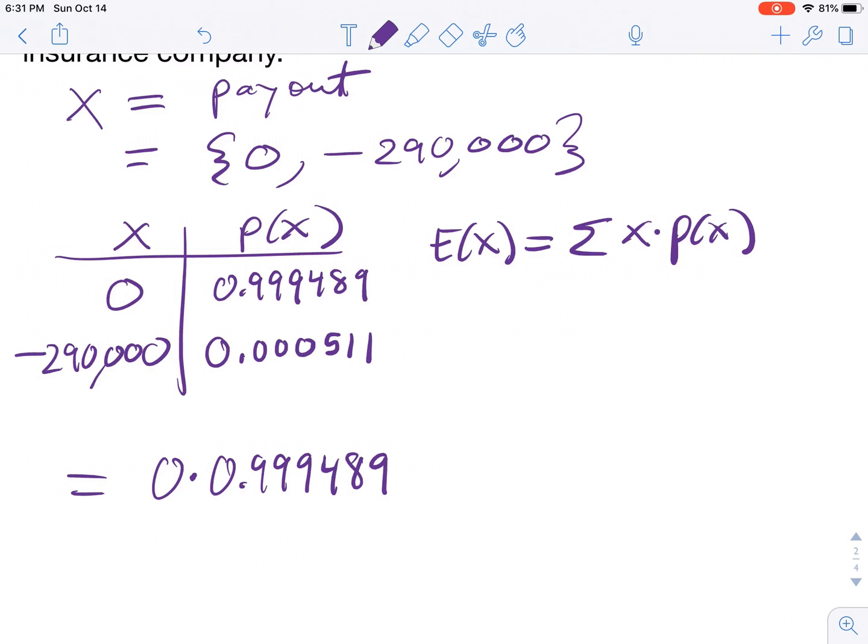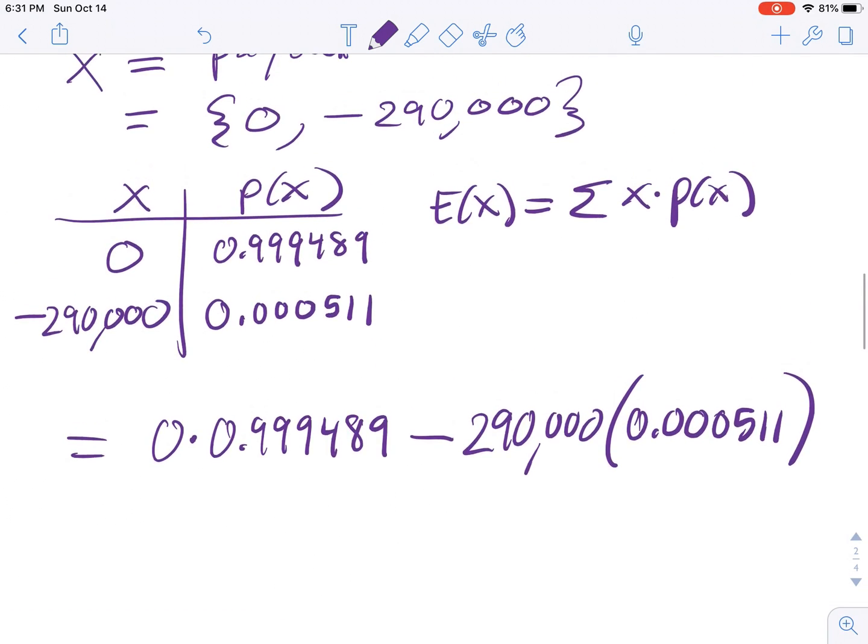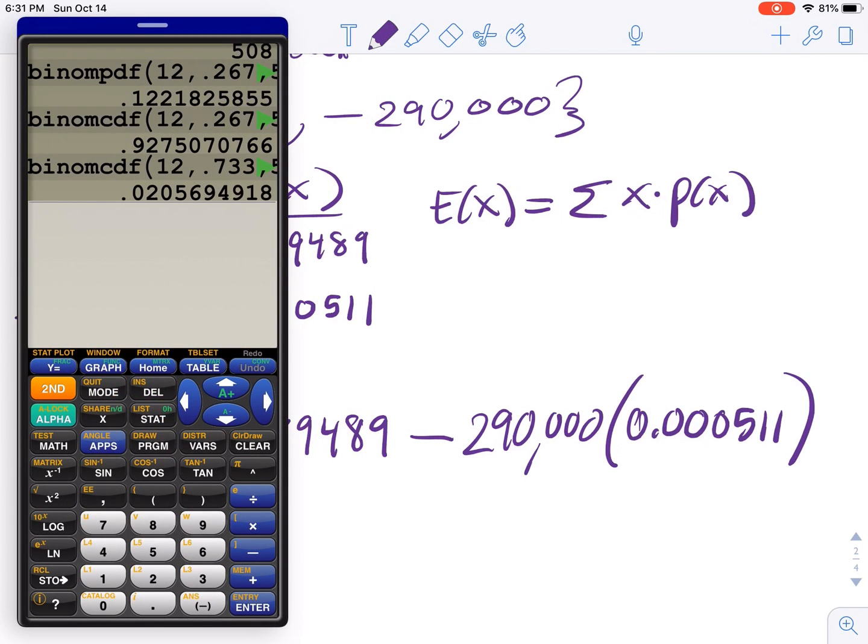So don't bother plugging that in your calculator. Just plug in negative $290,000 times 0.000511. Try to plug that in your calculator. That will be your expected value, the expected payout.